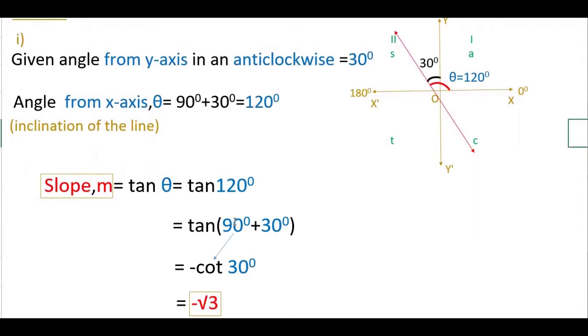Tan 120 you can write as tan(90° + 30°). And here it is odd number, 90 degrees and 270 like that, then you have to write the reciprocal. So tan you have to write cot 30 degrees. Why is it negative?